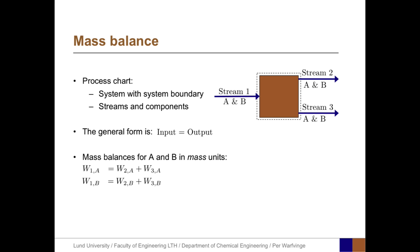The mass balances, expressed in mass units for A and B, will be: For A, W1A equals W2A plus W3A, because W1A is an input, while the A found in 2 and 3 are outputs from the system. And we can set up this corresponding equation for the component B.